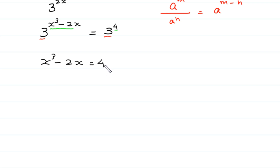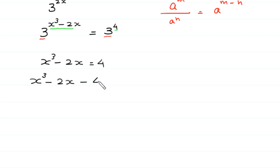Now we move this 4 to the left side. x cubed minus 2x, this positive 4 becomes negative 4 at the left side, equal to 0. This is a cubic equation and can be solved by factorization.